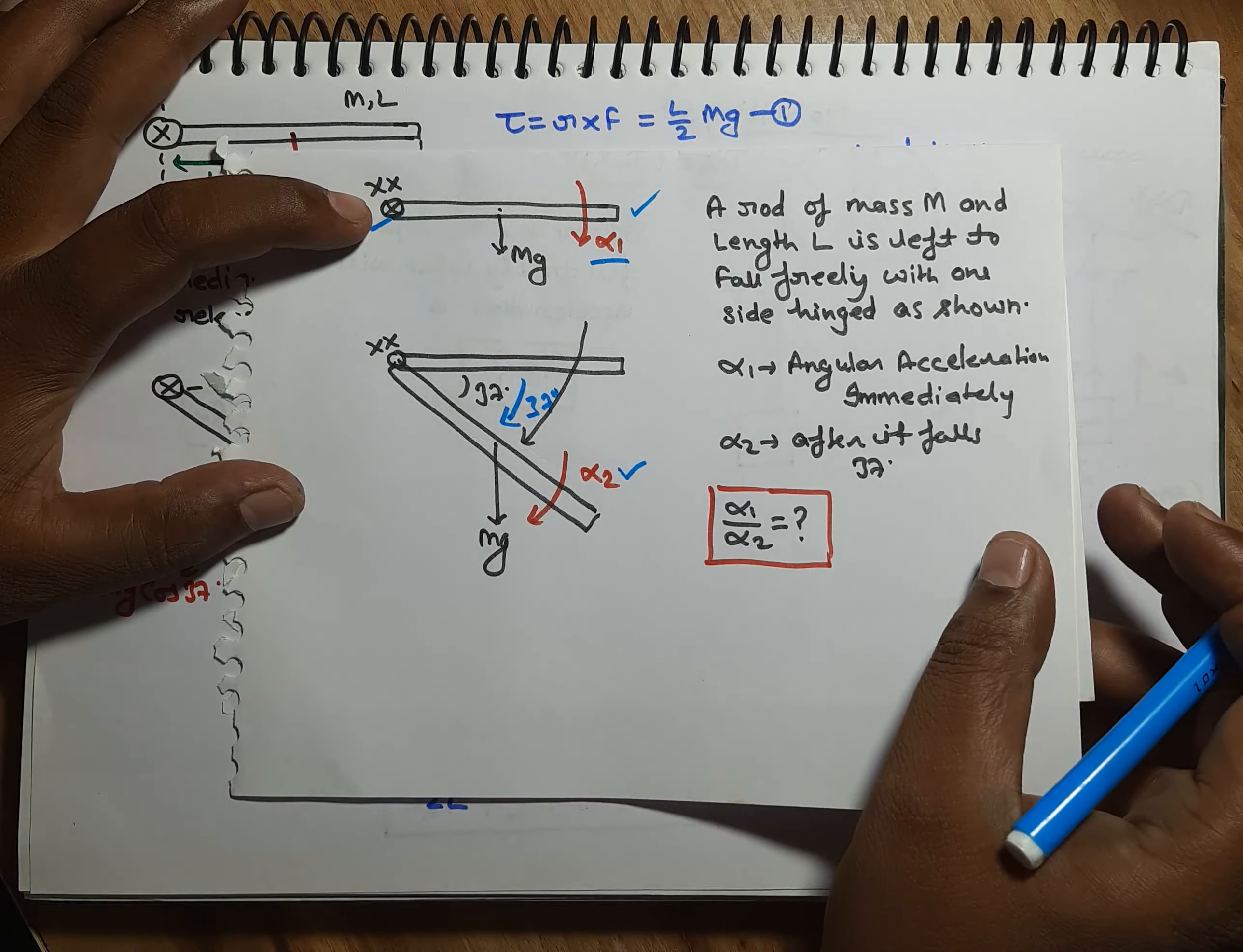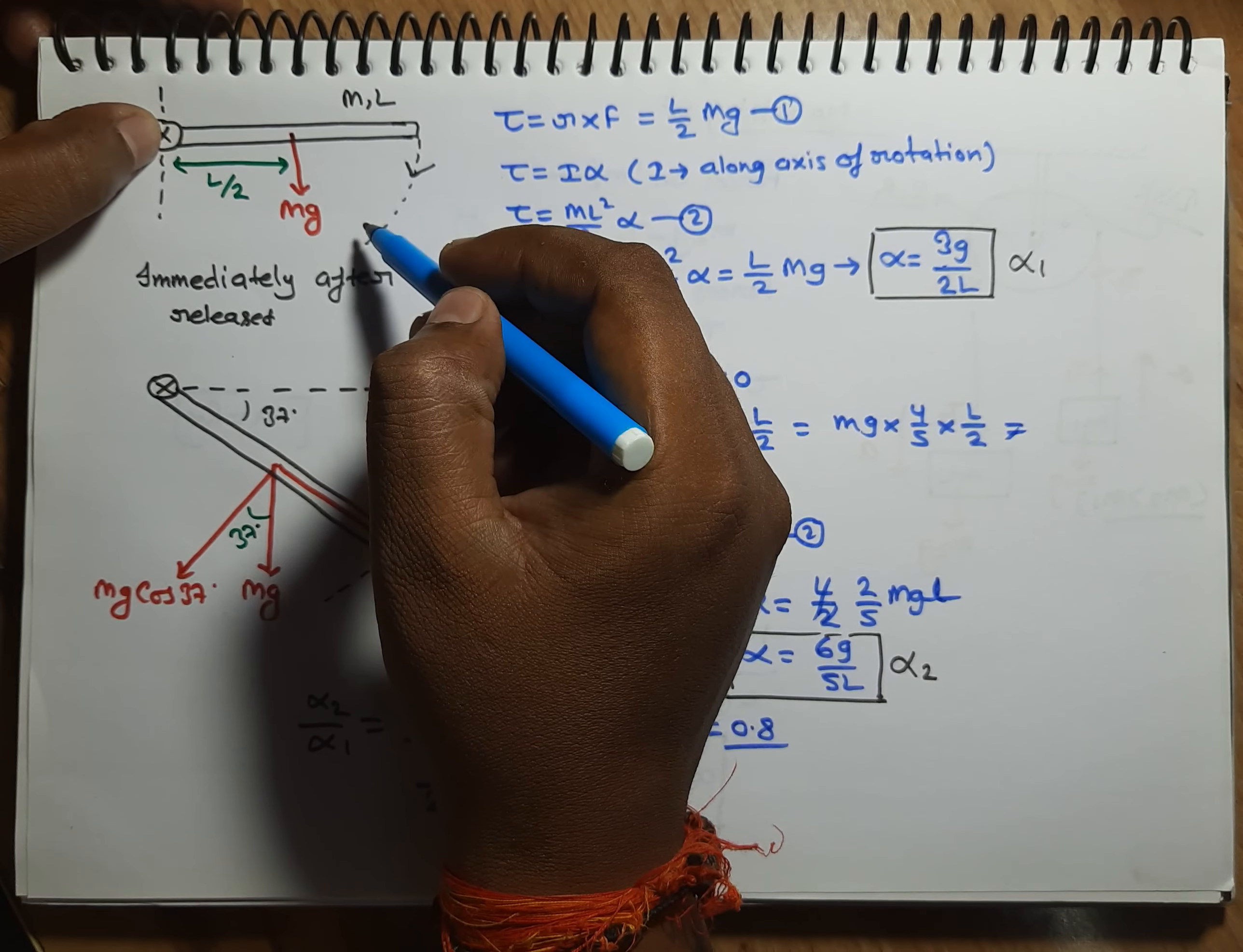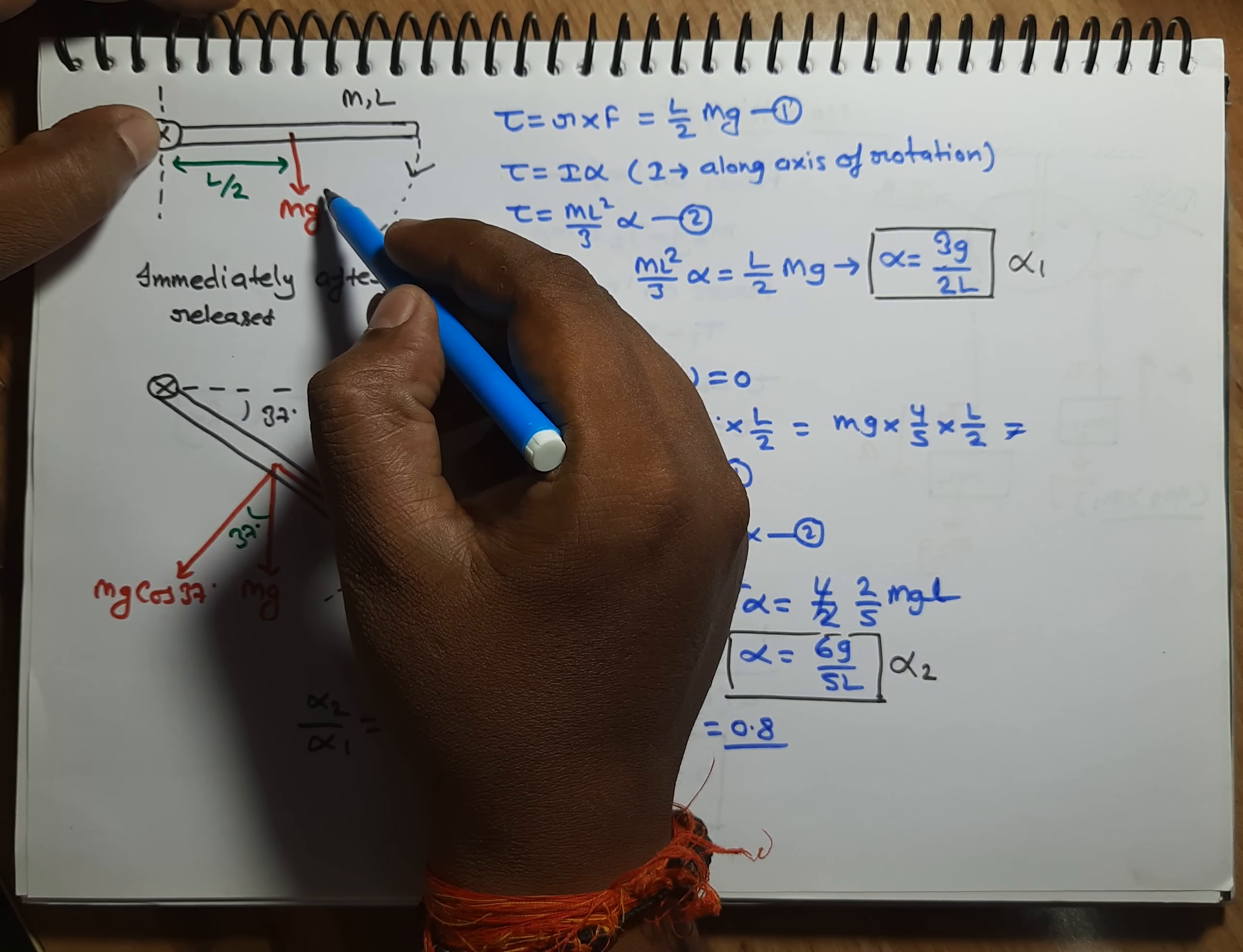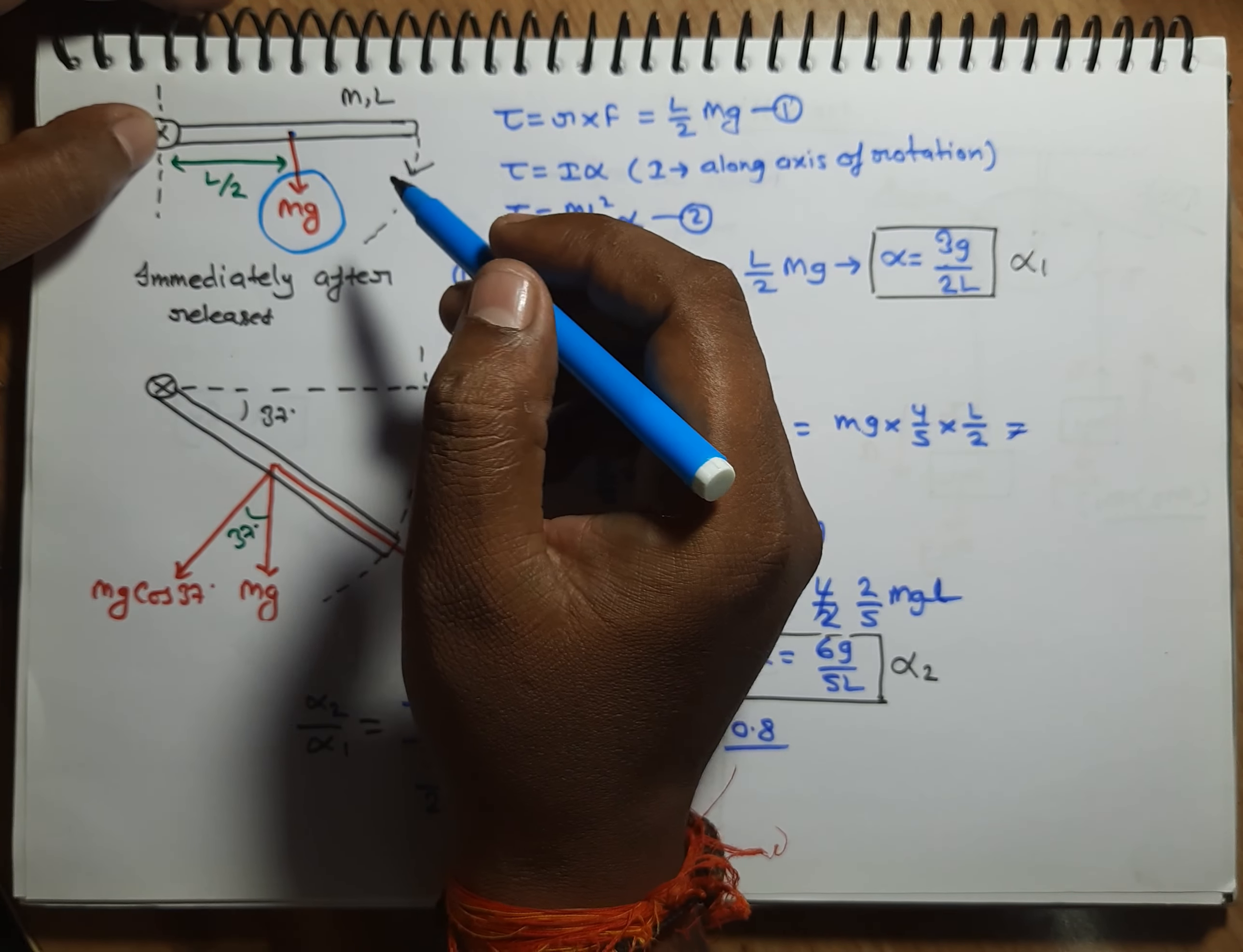So let's see friends, this question, how to do this question. So friends, when this end is hinged and it will be released from free fall, then the acting force which is not external force, which is gravitational force, which is mg. So friends, when it is gravitational force, which is acting from the center of mass, which is acting from the lower side of the axis.